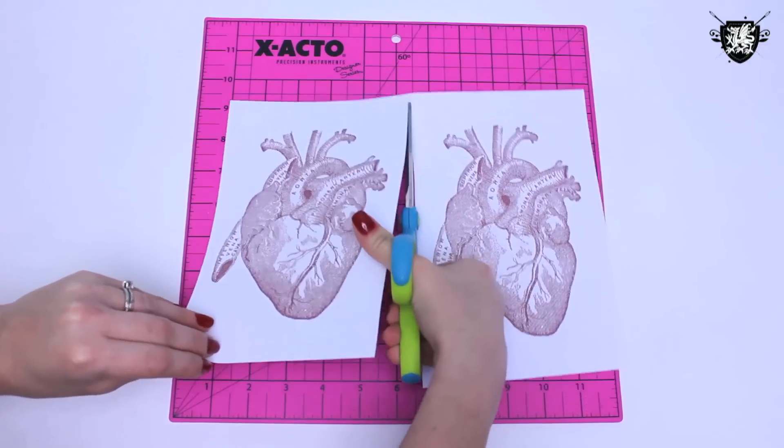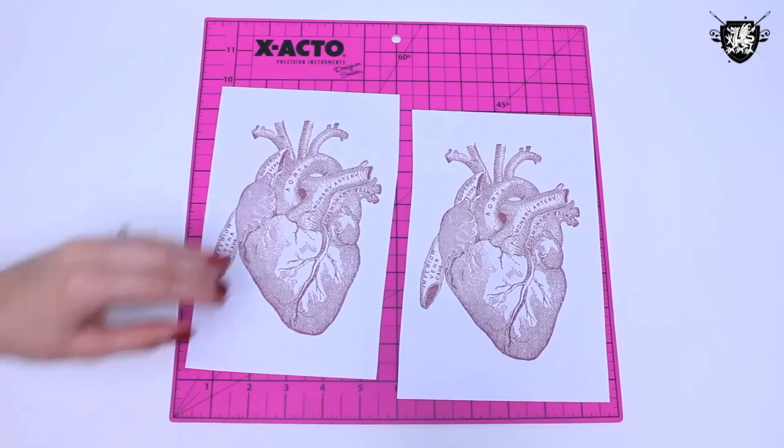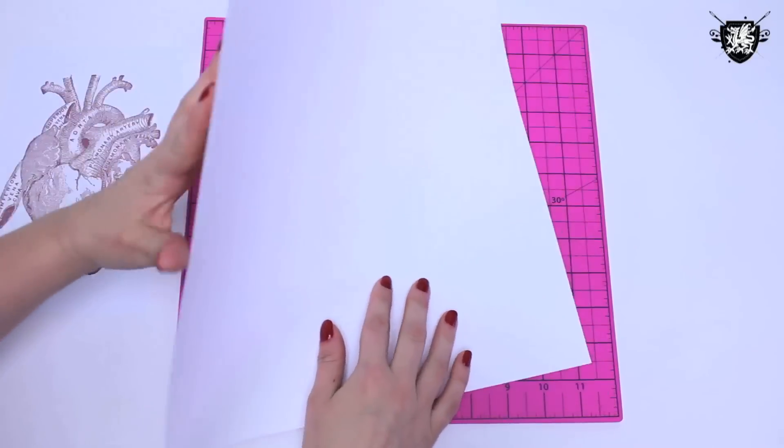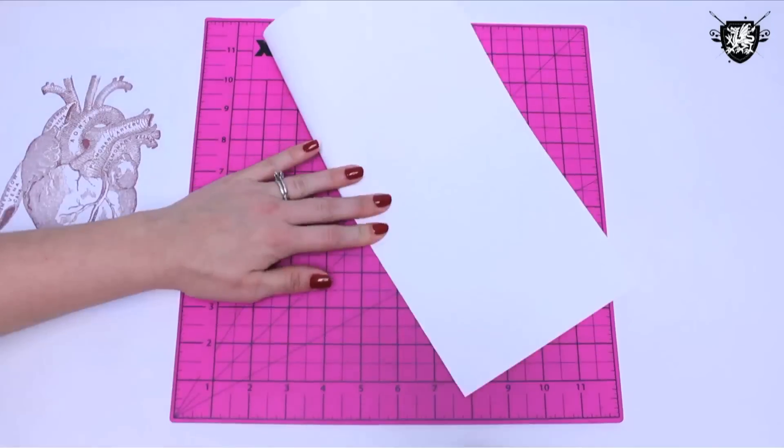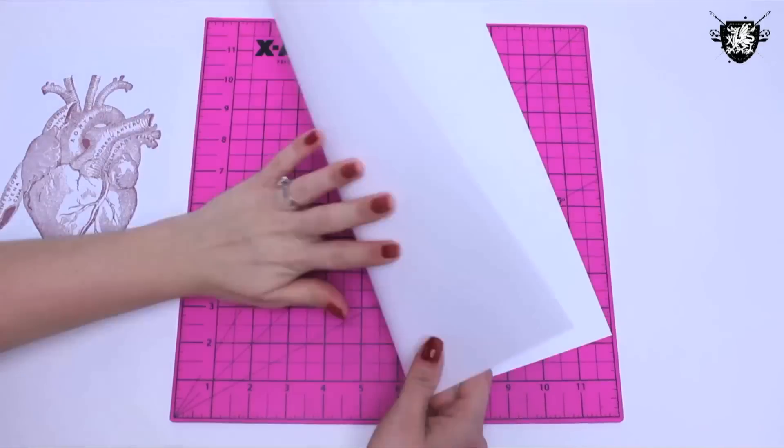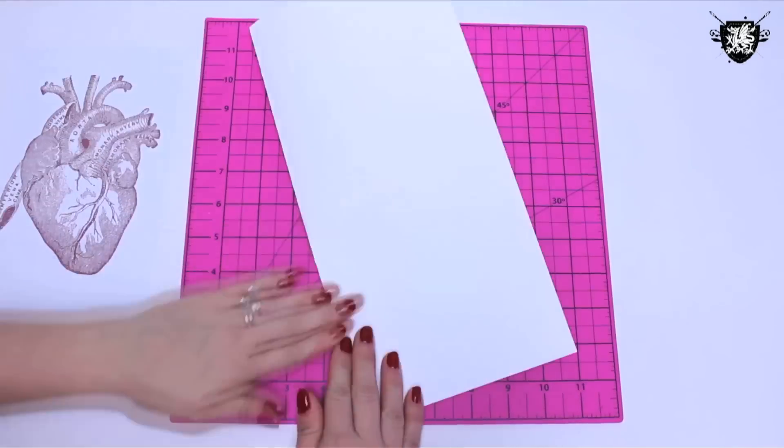Print it out, then take it over to your craft table and cut the page in half. Then take out a piece of cardstock and fold that in half. Fold it the other way and back again, then run a hard object along that seam to really make that fold a fold.